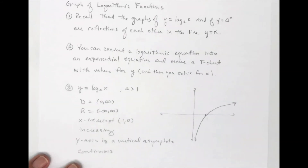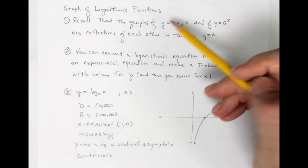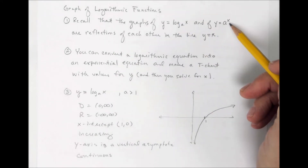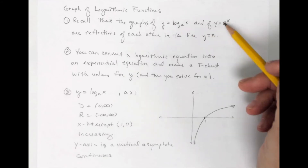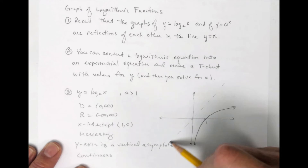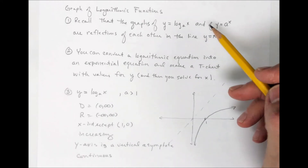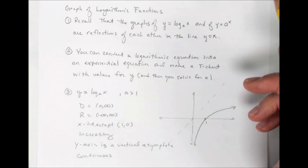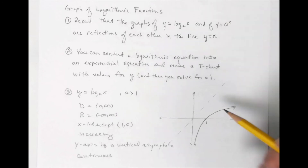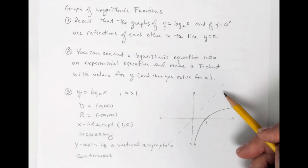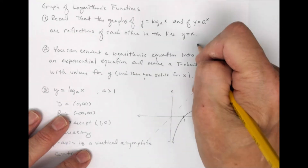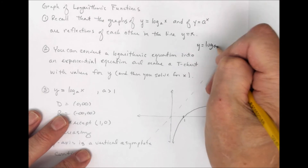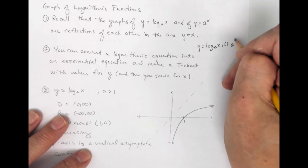The next topic is logarithmic functions. The graph of a logarithmic function and its corresponding exponential function — both base a — are reflections of one another in the line y equals x, because they are inverse functions. So y equals 2 to the x and y equals log base 2 of x are reflections of each other. You can also convert: y equals log base a of x if and only if a to the y equals x.